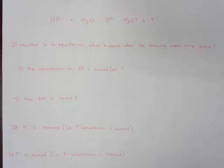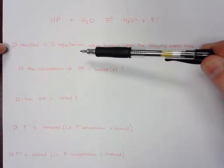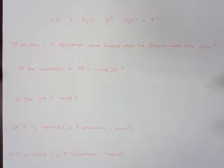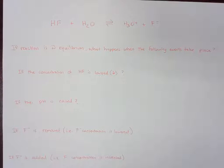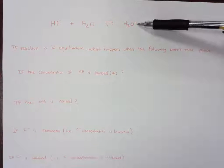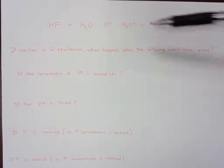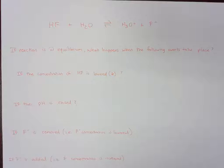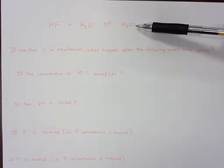In this video I'm going to go over some of the things we may see with equilibrium reactions. The question posed here is: if this reaction is at equilibrium, what happens when the following events take place? This reaction is the reaction of hydrofluoric acid with water, but it really applies to all equilibrium reactions. They're all going to behave this way when you adjust concentrations, remove products, remove reactants, or change the pH. H3O+ is the hydronium ion — the acid that exists in water — and it's going to be the controller of pH in the system.